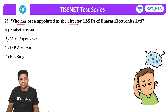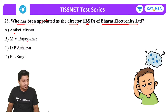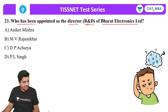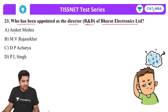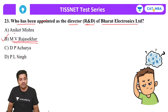Next: who has been appointed as the Director of R&D of Bharat Electronics Limited? Options: Aniket Mishra, M.V. Rajshekar, D.P. Acharya, or P.L. Singh. Most students answered A, but the correct answer is B — M.V. Rajshekar is the correct answer for Director R&D of Bharat Electronics Limited.